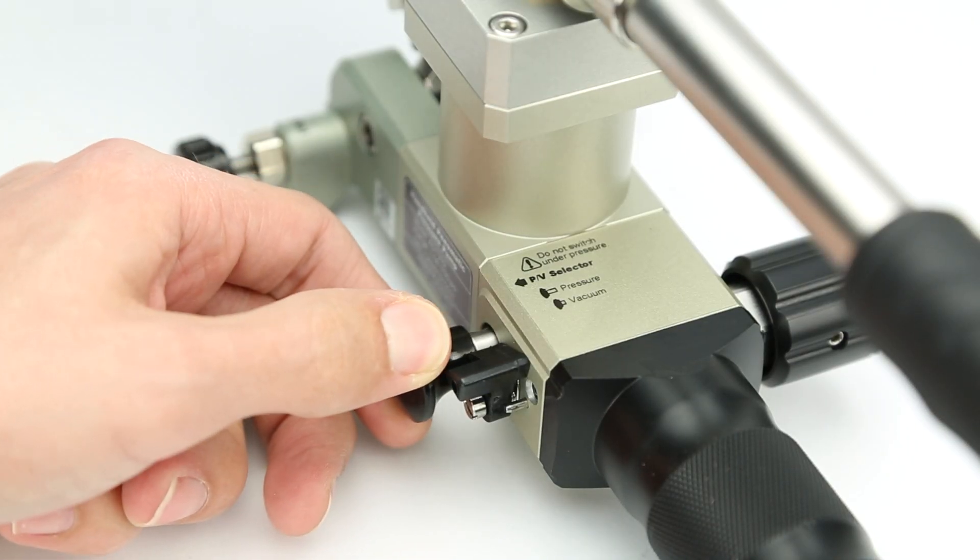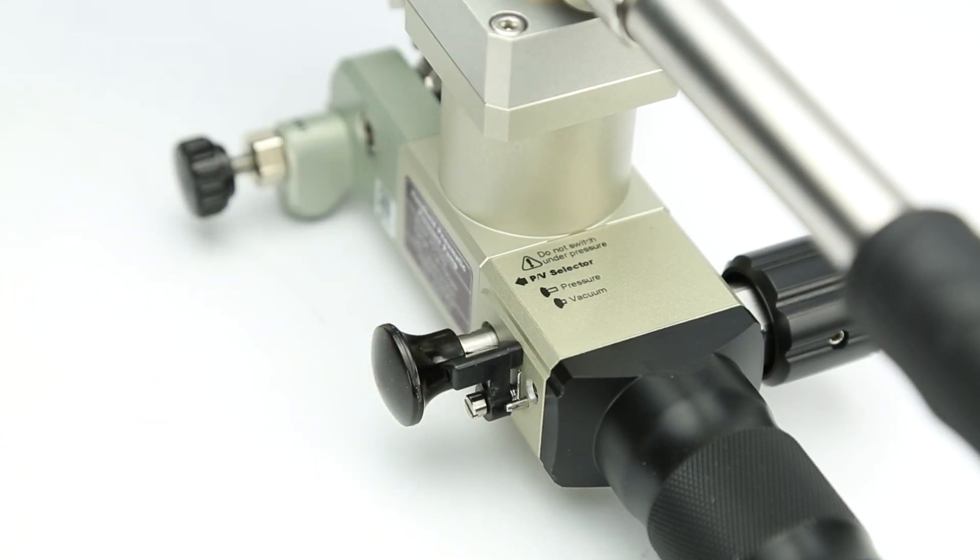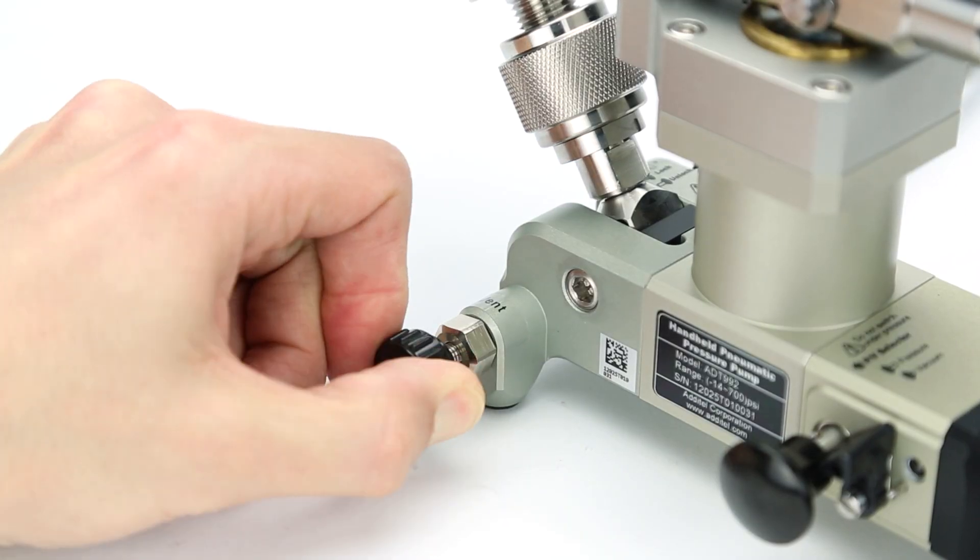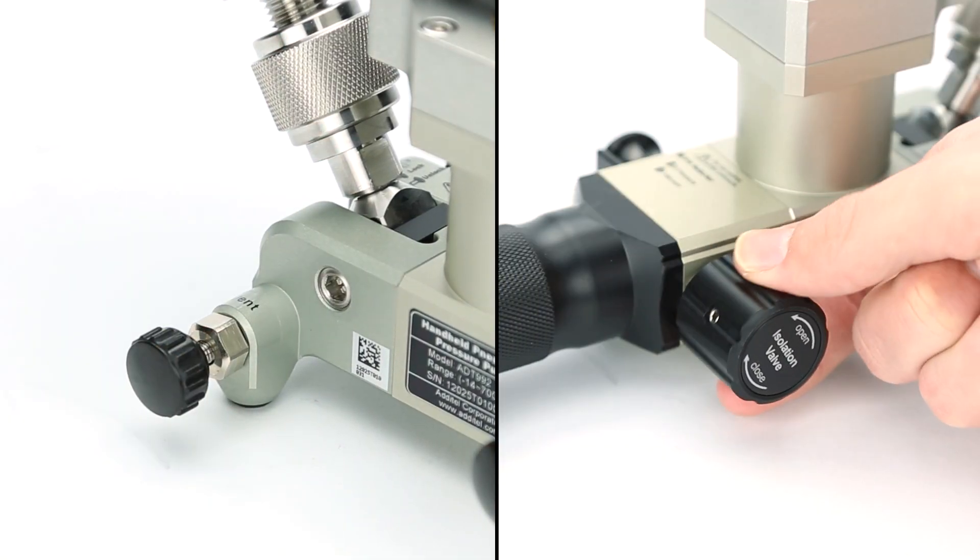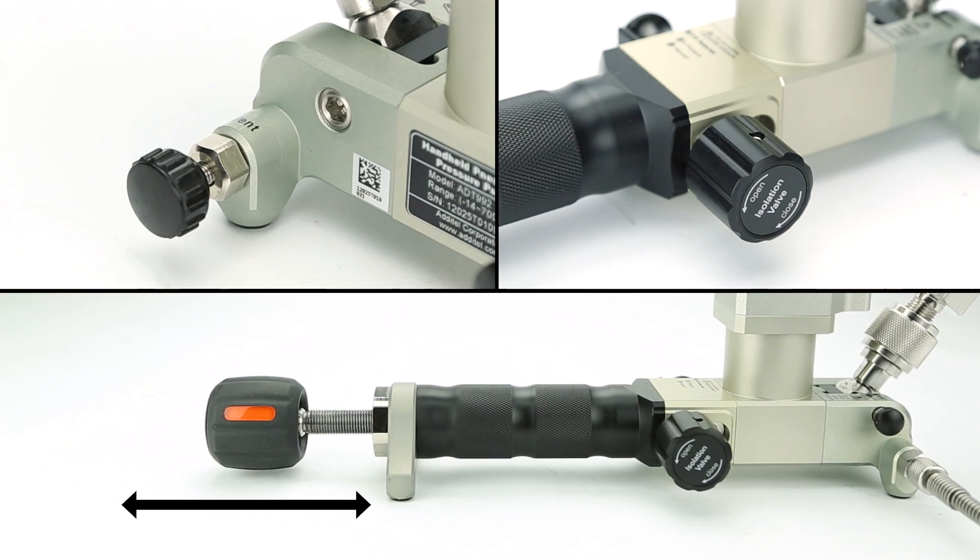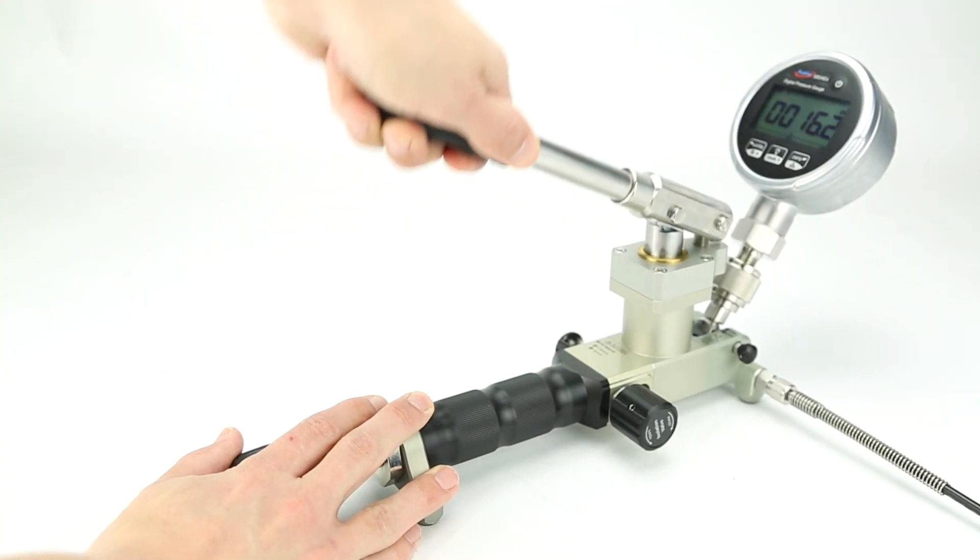Before pressurization, choose whether you want pressure or vacuum using the selector on the left side of the pump. Ensure the vent is closed, the isolation valve is open, and the fine adjust knob has room to operate in either direction before generating pressure with the main lever arm.